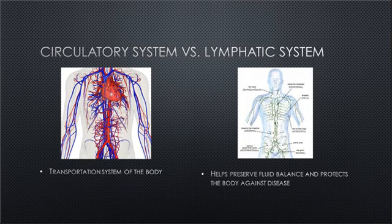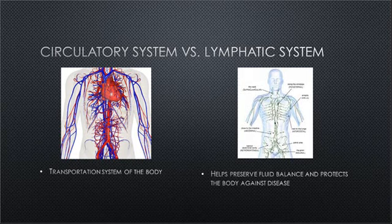Within the circulatory system, we also have a lymphatic system. They do go hand in hand together. The circulatory system is the transportation system of the body. If we're talking specifically about the blood vasculature that meets up with the heart and lungs, that's the cardiovascular system. The lymphatic system helps preserve fluid balance and protect the body against disease. The functions of the circulatory system that are important to remember: it transports nutrients, transports metabolic waste, and protects the body against disease-causing organisms.